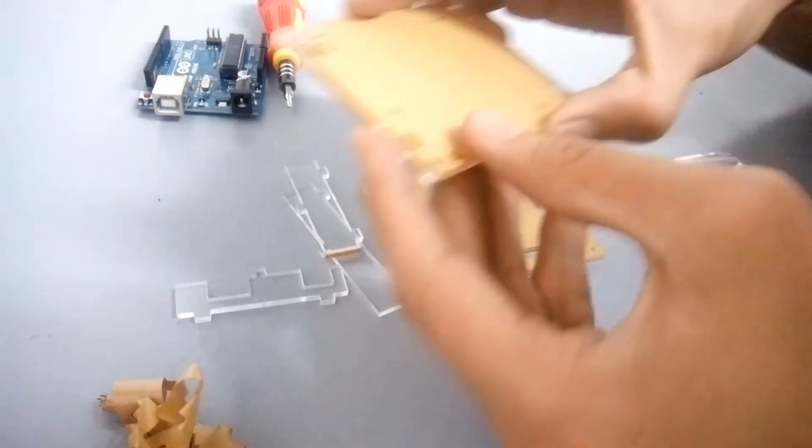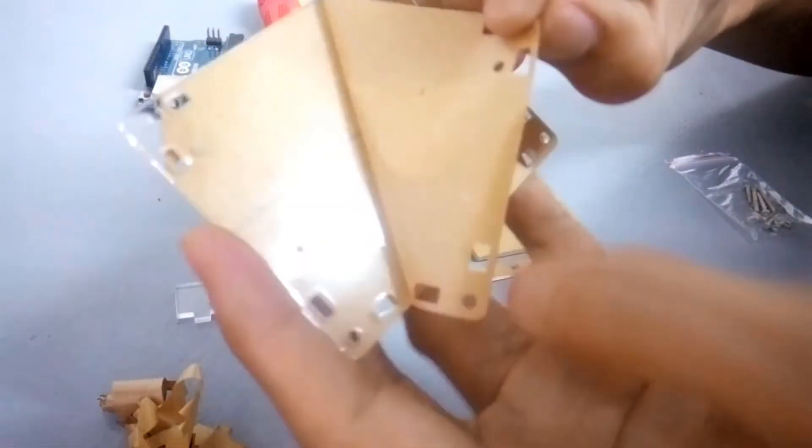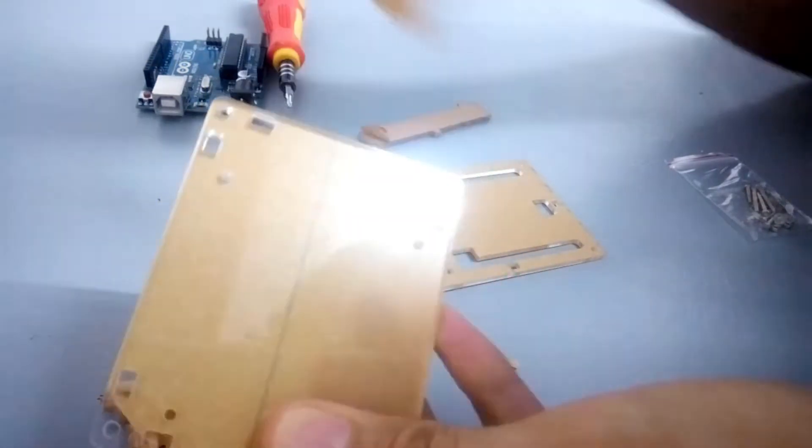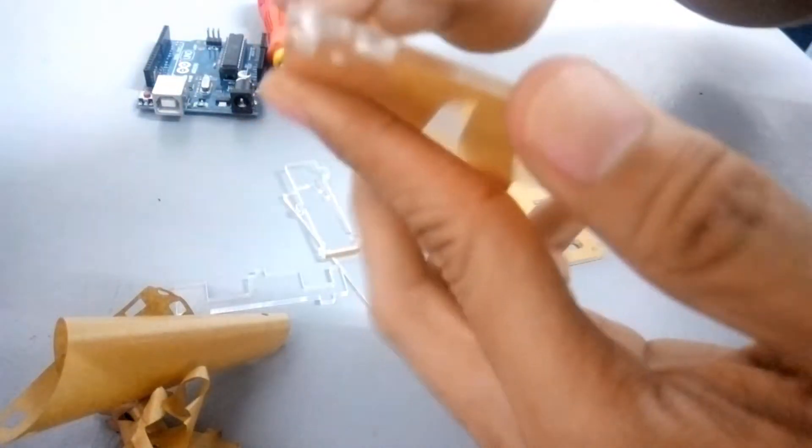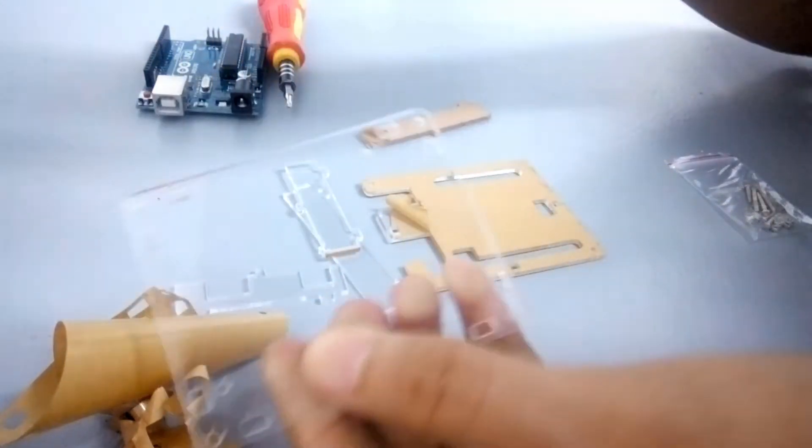The acrylic case has a protective paper that comes with it to protect the case from scratches. First, we must remove this so the transparent part of the case will show. After this, it's ready to install to the Arduino Uno board.